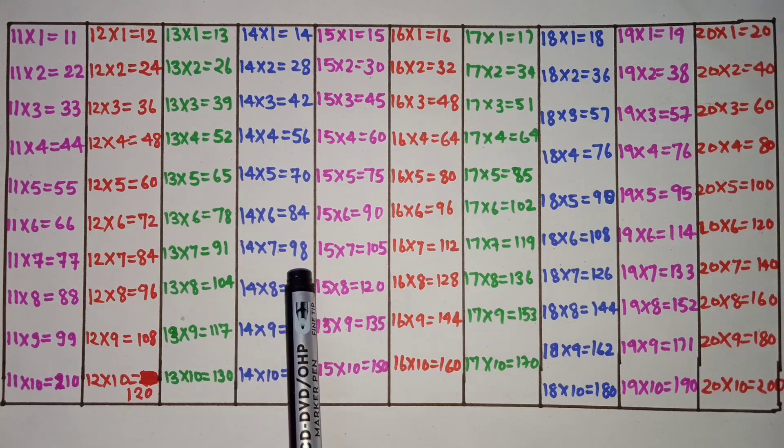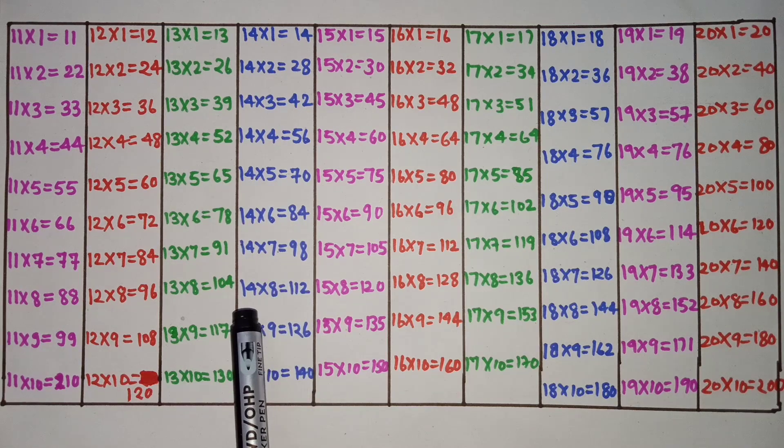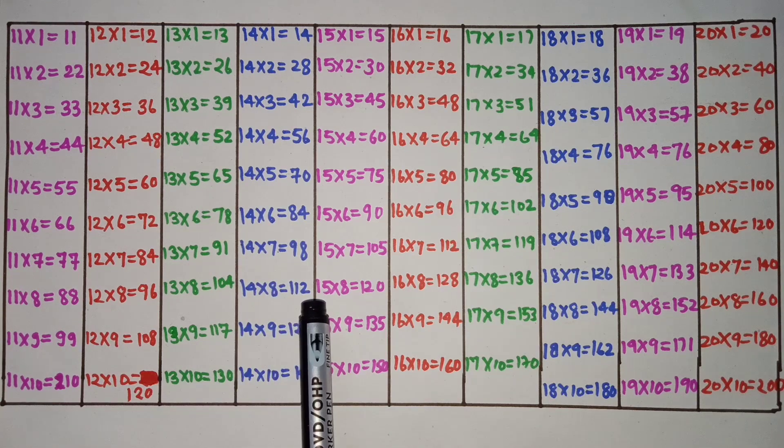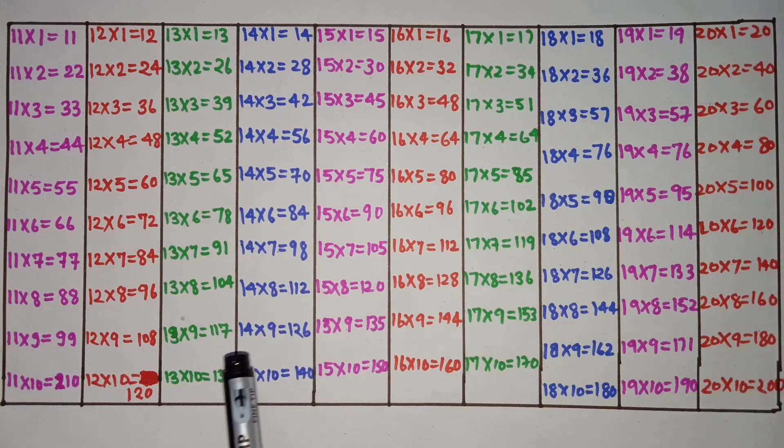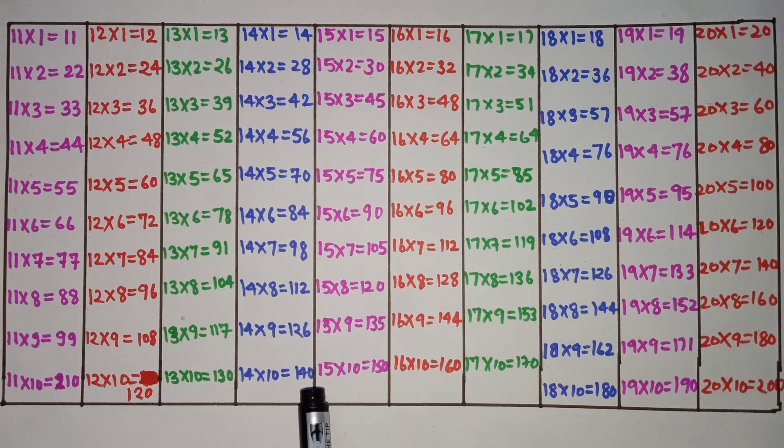14 sevens are 98, 14 eights are 112, 14 nines are 126, 14 tens are 140.